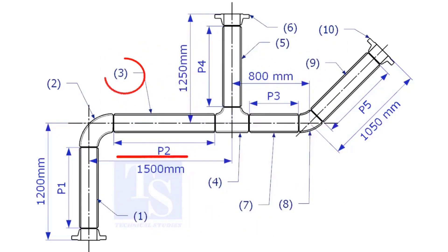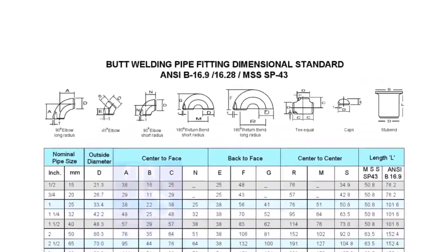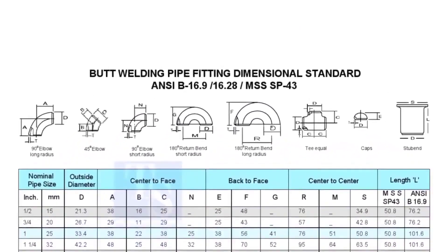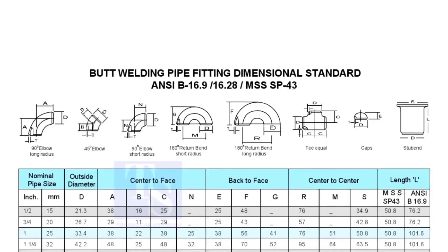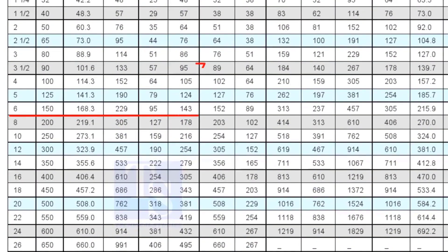Let us calculate the length of item number 3. We already know the takeoff length of the 6 inch long radius elbow. Now, check the chart for the takeoff of length of the equal tee. It is 143mm.